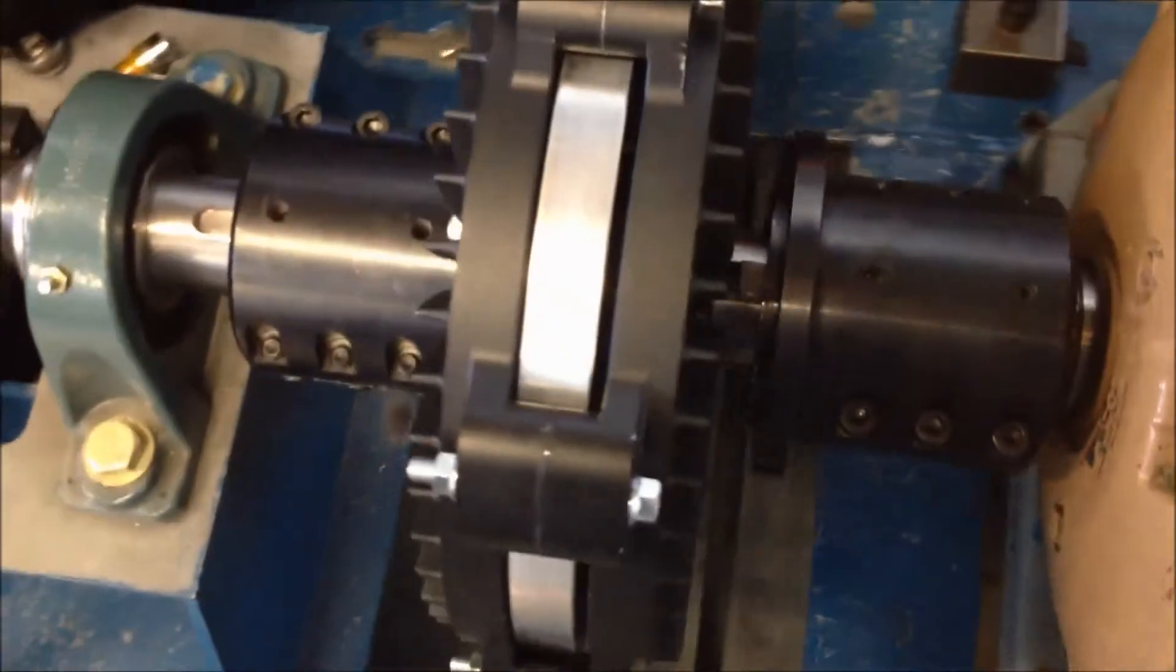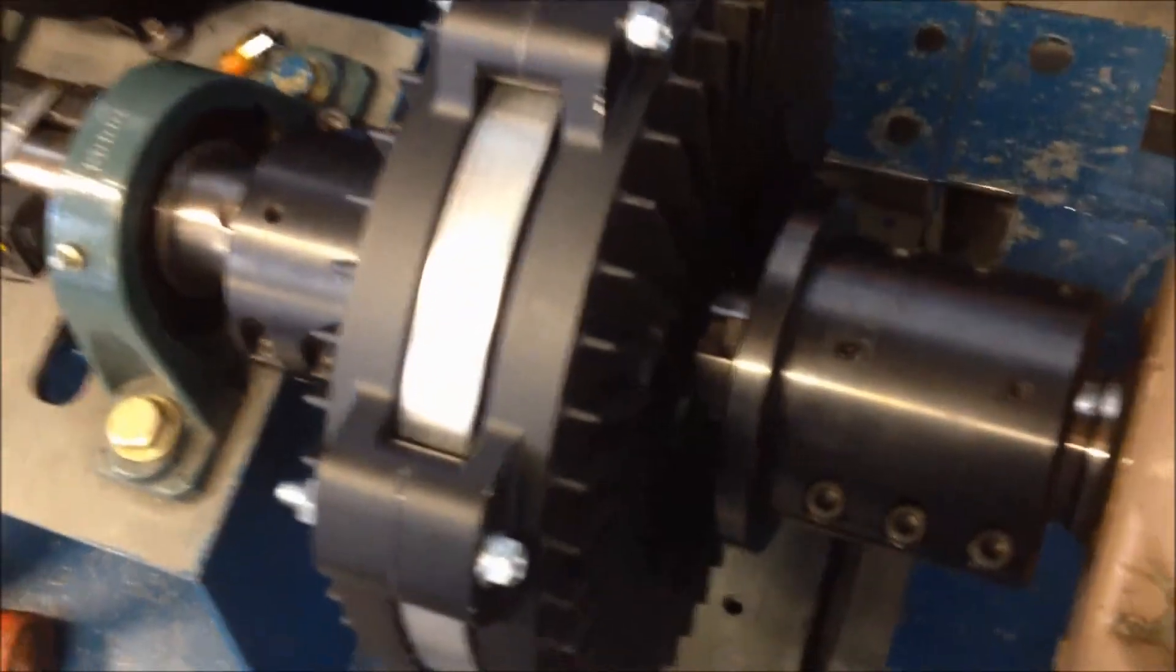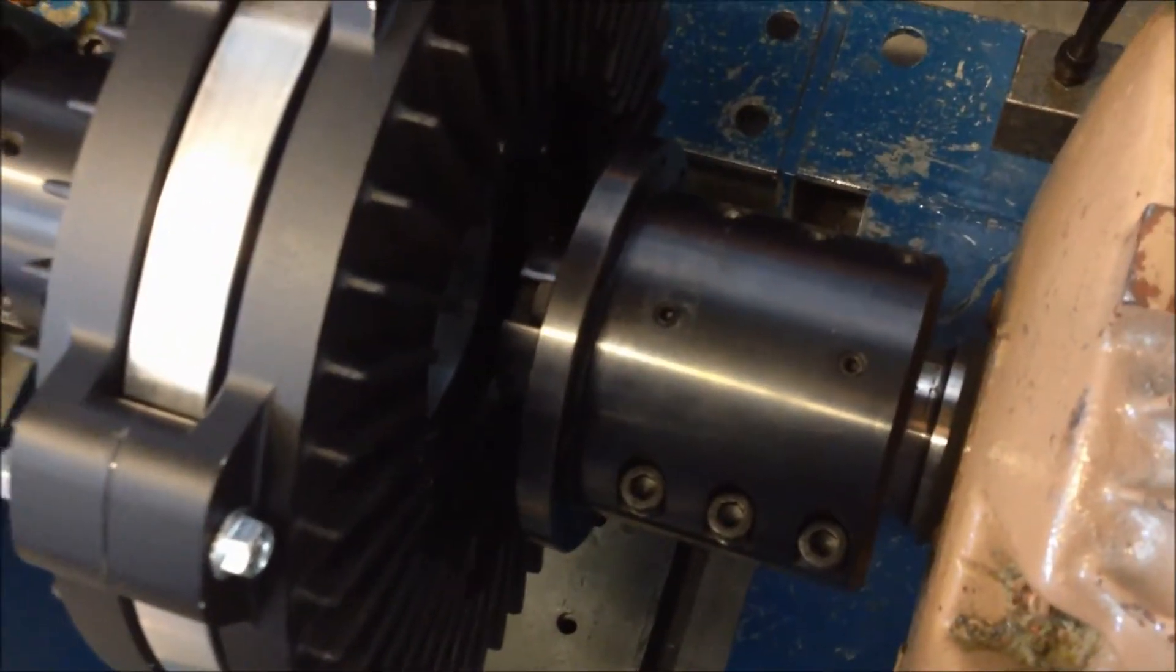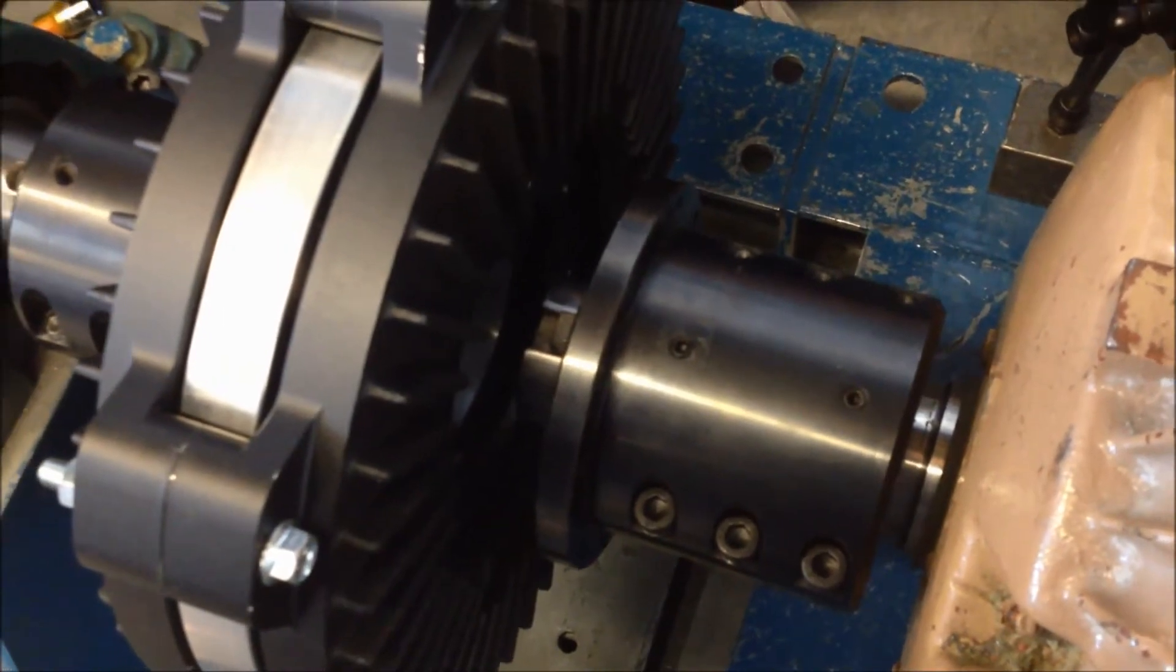Slide the FSC and load hub towards the motor until there is about one inch of clearance between the motor shaft face and the induction rotor face.